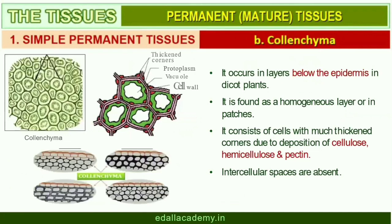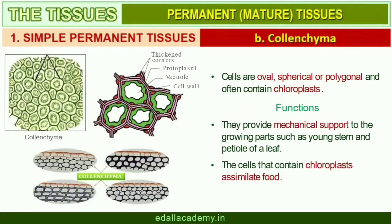Collenchyma occurs in layers below the epidermis in dicotyledonous plants. It is found either as a homogeneous layer or in patches. It consists of cells which are much thickened at the corners due to deposition of cellulose, hemicellulose, and pectin. Collenchymatous cells may be oval, spherical, or polygonal and often contain chloroplasts. These cells assimilate food when they contain chloroplasts. Intercellular spaces are absent. They provide mechanical support to the growing parts of the plant such as young stem and petiole.